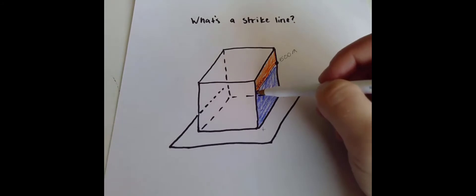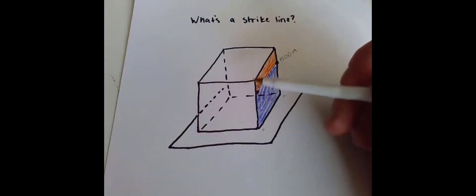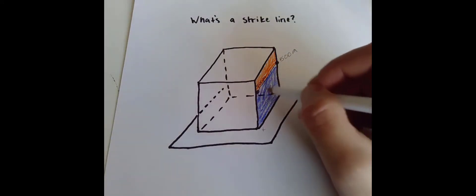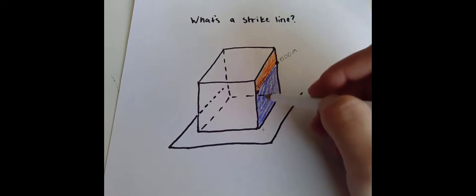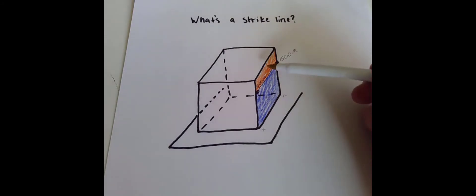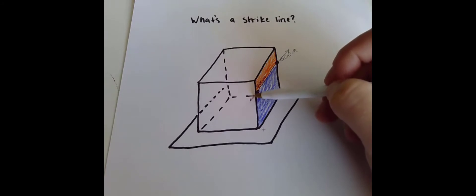The line that connects this point to this point is a strike line for that contact. The reason for that is if we took a horizontal plane and we fit that horizontal plane to intersect with the contact between the orange unit and the blue unit, the horizontal plane would intersect along this line. We call that the 500 meter strike line and the direction of this would be strike.